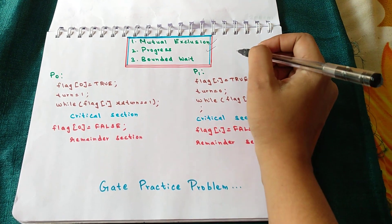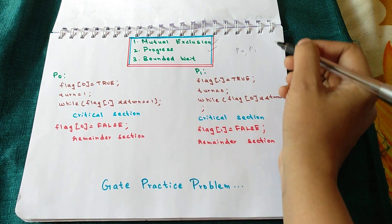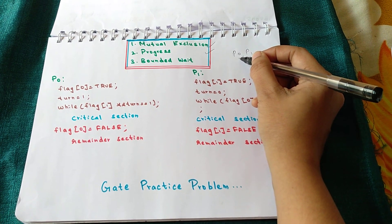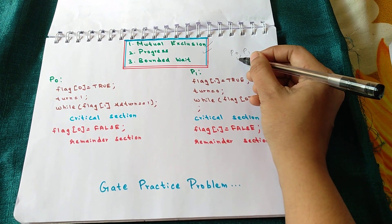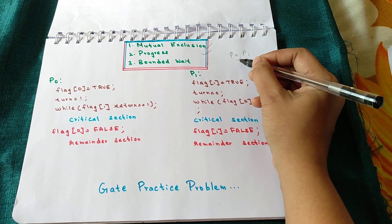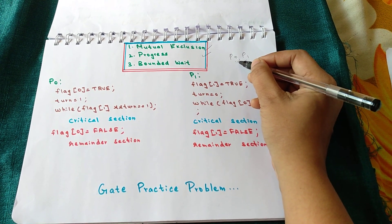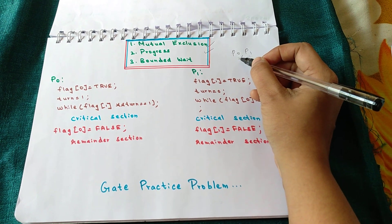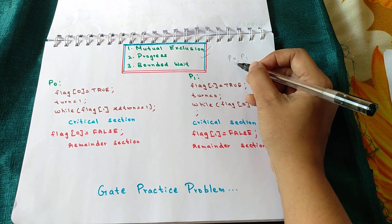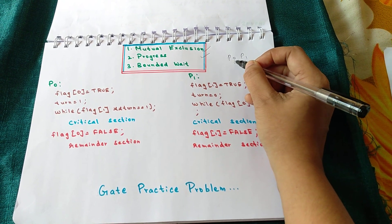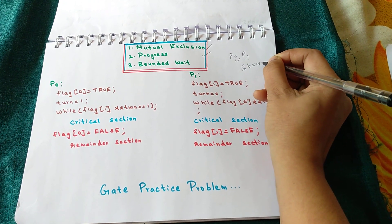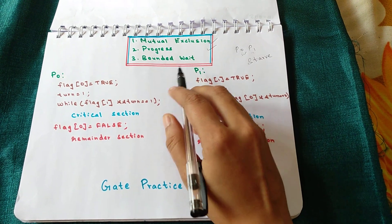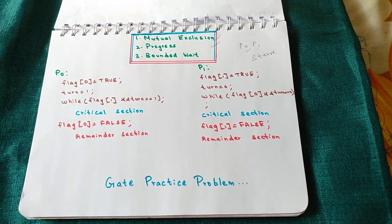The third requirement is bounded wait. Suppose P1 requests entry to the critical section but P0 is already executing in it, so P1 waits. If P0 finishes, then immediately requests entry again and the OS grants it again, P1 is made to wait a second time. If this keeps happening, P1 starves — this is called starvation, and it must not happen. The requirement that prevents this is called bounded wait. Let's verify whether Peterson's algorithm satisfies this.